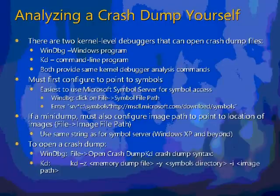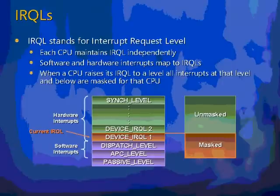Our next concept is IRQLs. You've all been exposed to that term when you've seen the IRQL Not Less or Equal bug check. IRQL stands for Interrupt Request Level. In the Windows operating system, each processor has its own notion of an interrupt request level that it uses to mask off interrupts, mapping hardware and software interrupts into its own internal IRQL table.